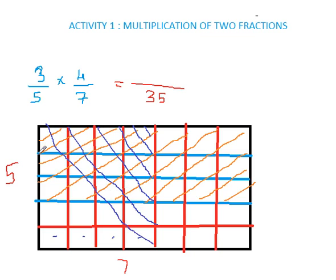In this we can see first fraction is shaded horizontally, second fraction is shaded vertically. Now both the fractions, that means both the shaded positions intersect at some points. That means some boxes are shaded for both.